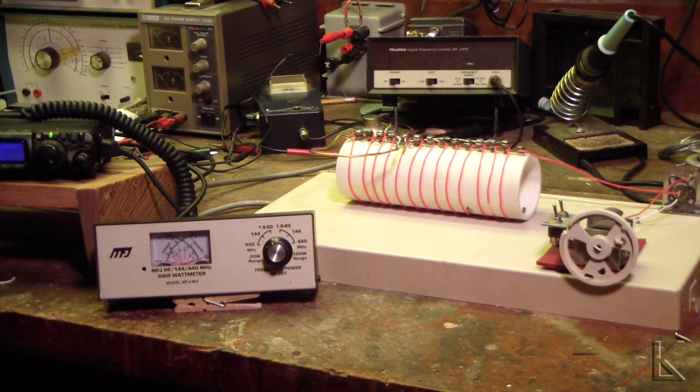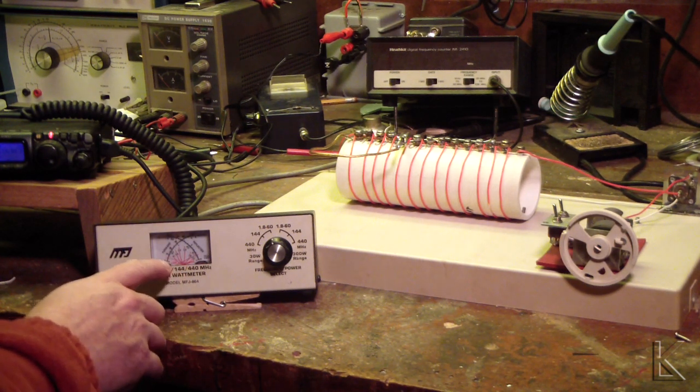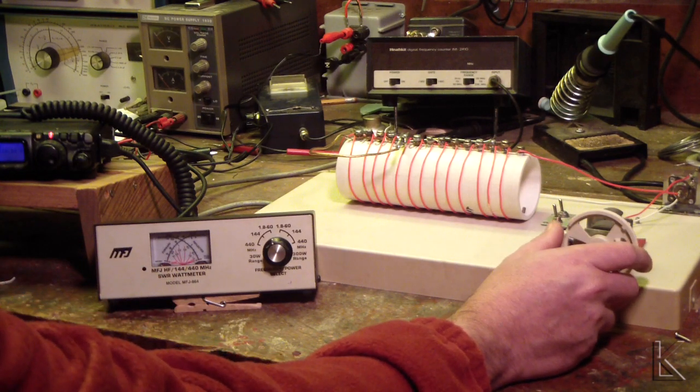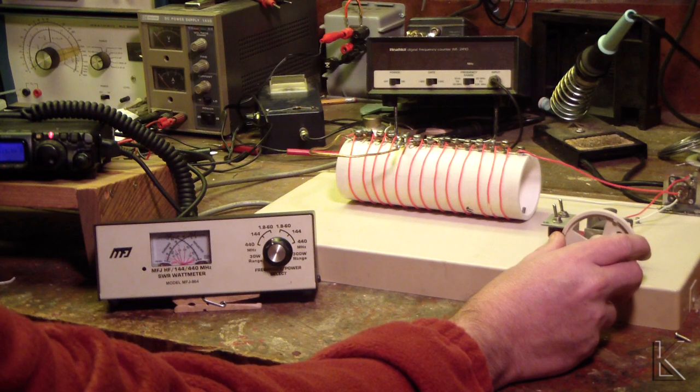Now I'm set to one watt. What I'm going to do is transmit a carrier. Watch the meter. We're at about two to one. If I tweak the capacitor while I transmit, right there. One to one. So right now I'm tuned up and operating on 40 meters.